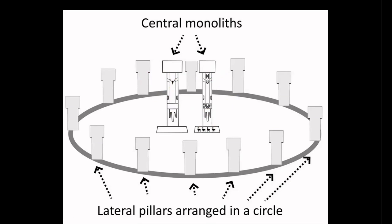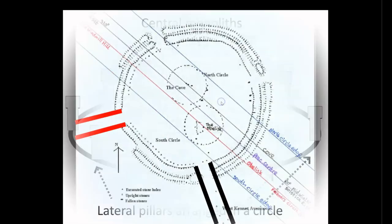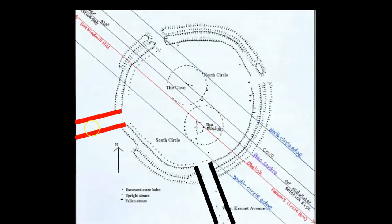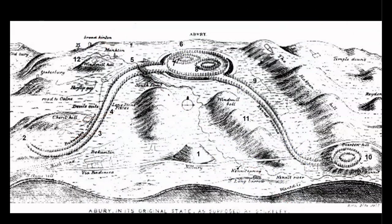Avebury is connected into two other structures via a stone conduit system — Beckhampton Avenue here, and West Kennet Avenue here, intentionally highlighted in red and black. These two avenue systems, with the West Kennet Avenue leading away from Avebury down to a mysterious structure known as the Sanctuary here on the bottom right, and Beckhampton Avenue leading to another structure that I will mention in just a moment.